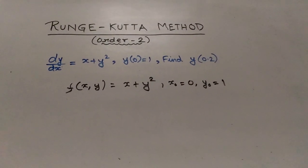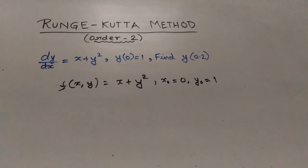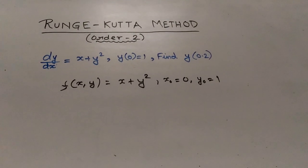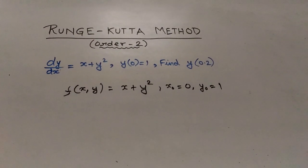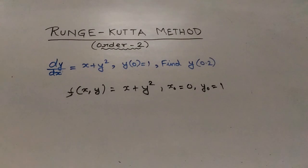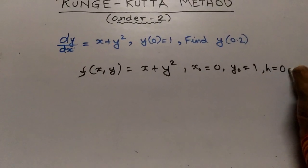Our x0 is 0 and our y0 is 1. Now we will assume a value of h. Since we need to find y at x equals 0.2, let us assume h equals 0.1.